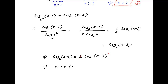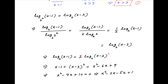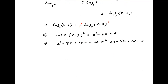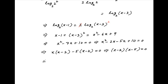Therefore, the given equation becomes x minus 1 is equal to (x minus 3) squared. The right hand side is equal to x squared minus 6x plus 9, and therefore the equation reduces to x squared minus 7x plus 10 equals 0, which factors as (x minus 2)(x minus 5) equals 0. Therefore x is either equal to 2 or equal to 5.